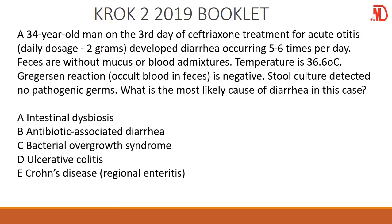So we have a 34-year-old man on the third day of septrizone treatment for acute otitis — that's an ear infection. The person developed diarrhea five to six times per day. Look at the correlation: right after being given septrizone the person started developing diarrhea. Now there is no blood in the stool, so we would not be thinking of organisms like Shigella. Stool culture detected no pathogenic microorganisms causing this diarrhea. So what comes to mind is that this could be a result of the antibiotics the person is taking, and hence our diagnosis is antibiotic-associated diarrhea.